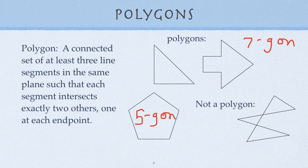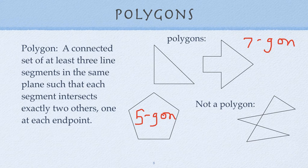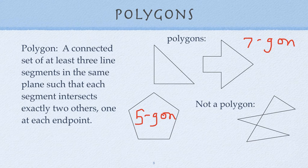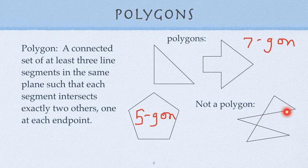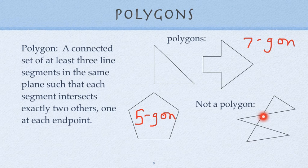This one over here is not a polygon because it fails to have connecting lines at the endpoints of those lines. So this is an endpoint and that's an endpoint, and those cross another line segment. They don't connect with the endpoints—they connect also in between, in the middle of the line segments. So that's why this one is not a polygon.